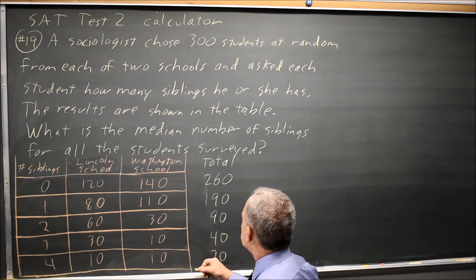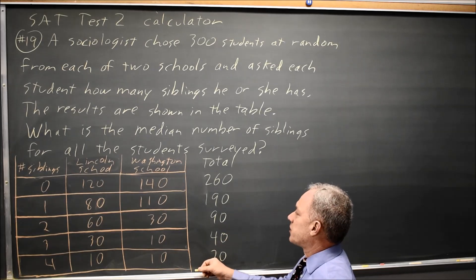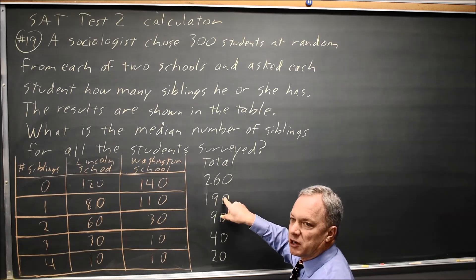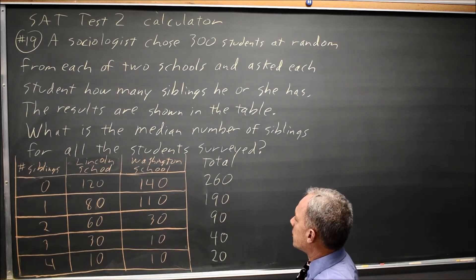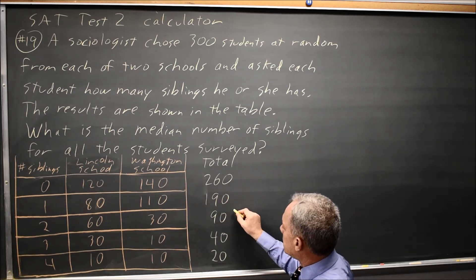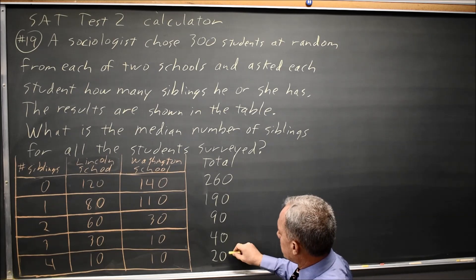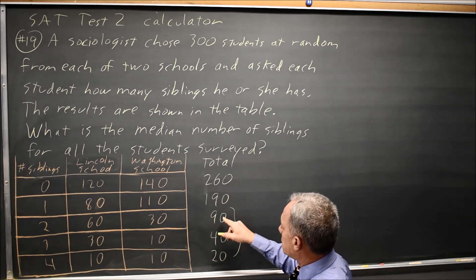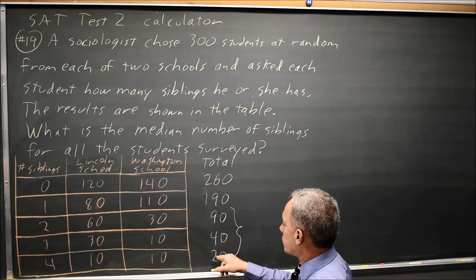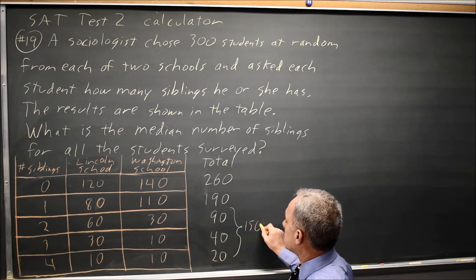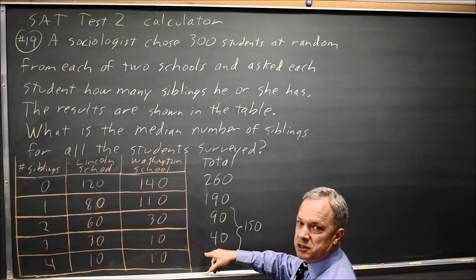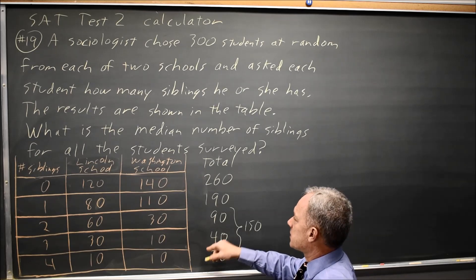The median number should have 300 values below and 300 values above. It's midway between the two middle numbers. So if I total these numbers, 90 plus 40 is 130, plus 20 is 150. So the median can't be here because I won't have 300 values less.